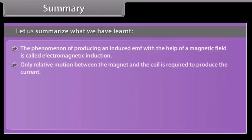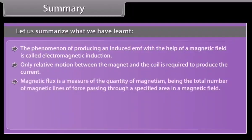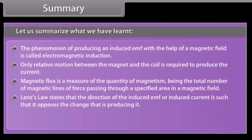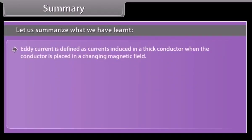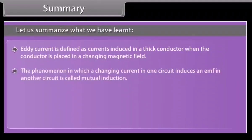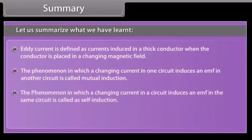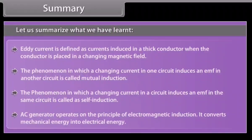Summary: Only relative motion between the magnet and the coil is required to produce the current. Magnetic flux is a measure of the quantity of magnetism, being the total number of magnetic lines of force passing through a specified area in a magnetic field. Lenz's law states that the direction of the induced EMF or induced current is such that it opposes the change that is producing it. Induced EMF can also be produced by moving a conductor inside a uniform magnetic field. Eddy currents are induced in a thick conductor when placed in a changing magnetic field. The phenomenon in which a changing current in one circuit induces an EMF in another circuit is called mutual induction; when it occurs in the same circuit, it is called self-induction. The AC generator operates on the principle of electromagnetic induction and converts mechanical energy into electrical energy.